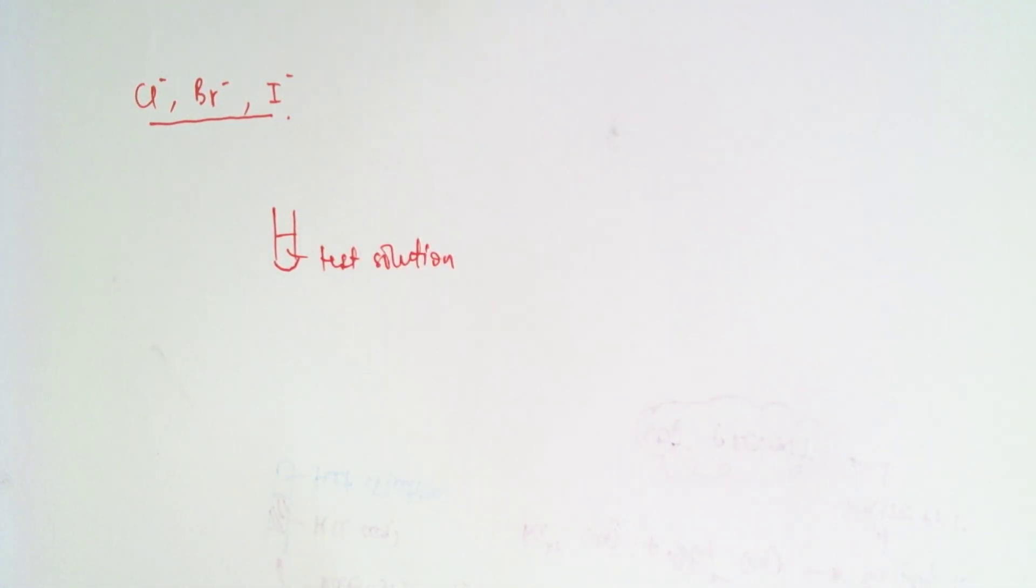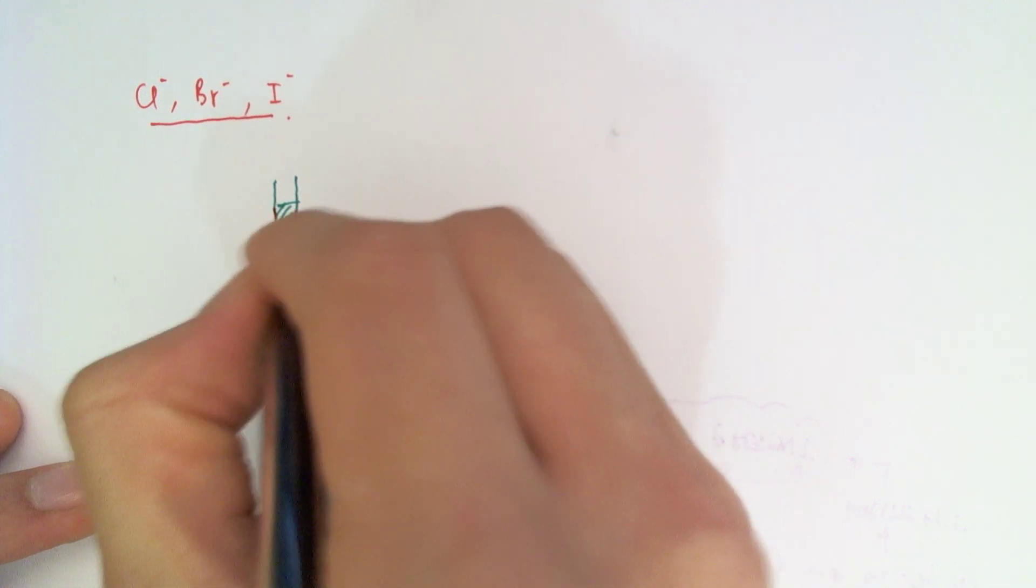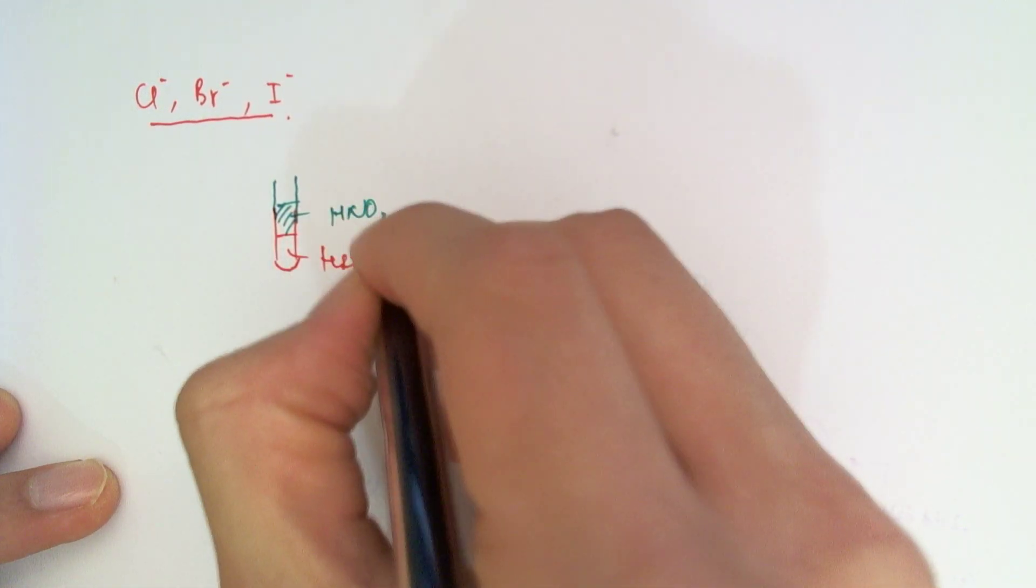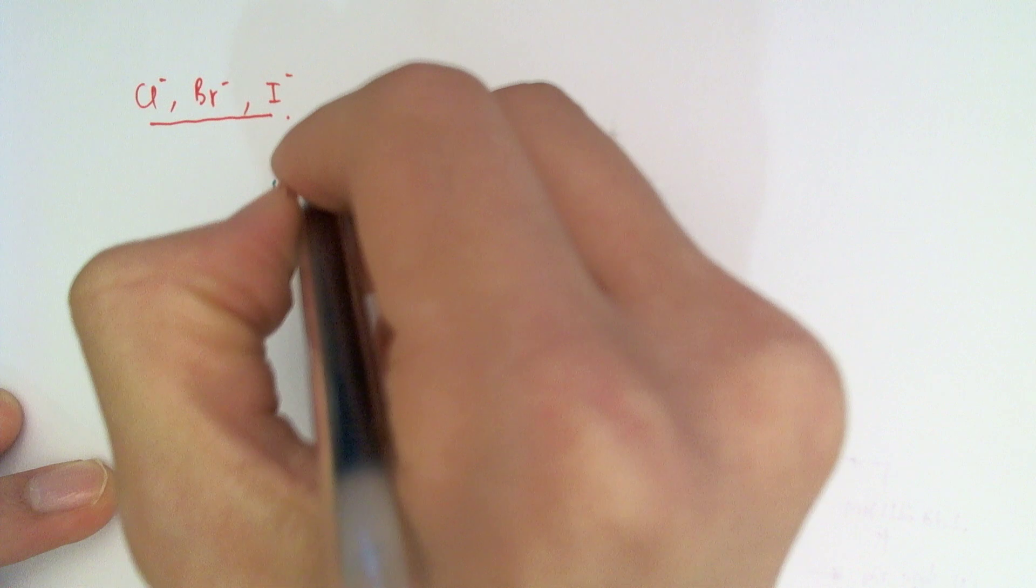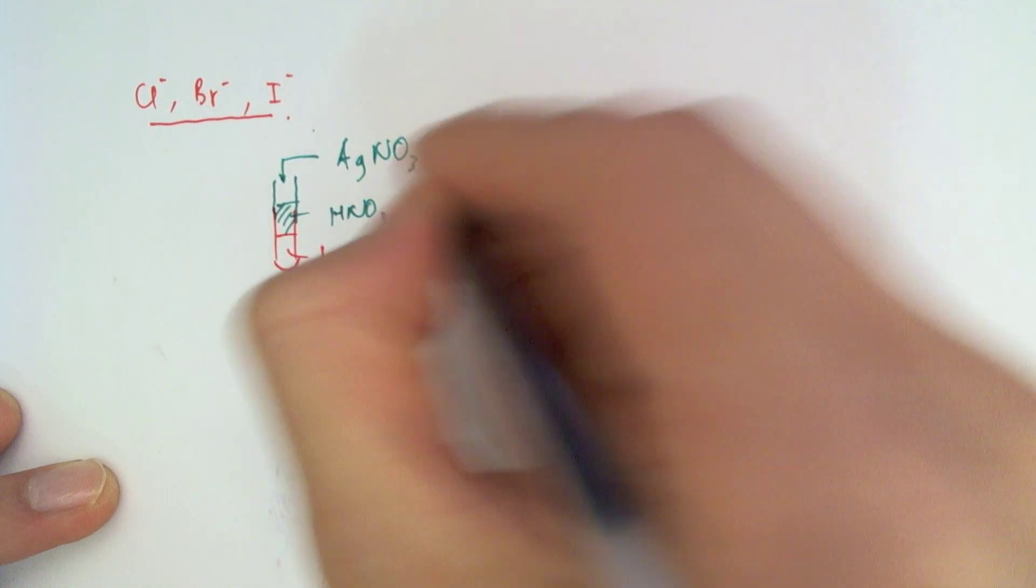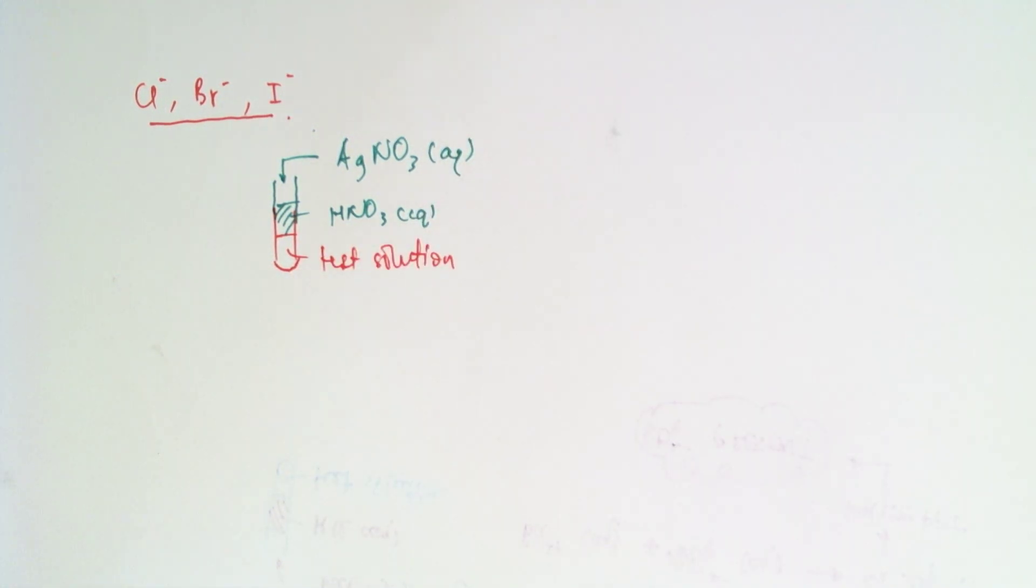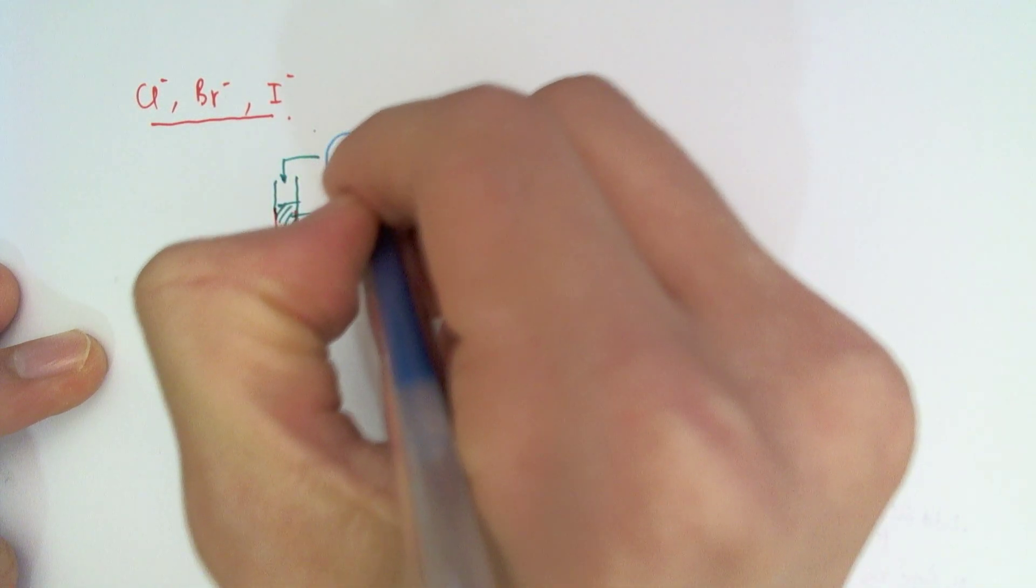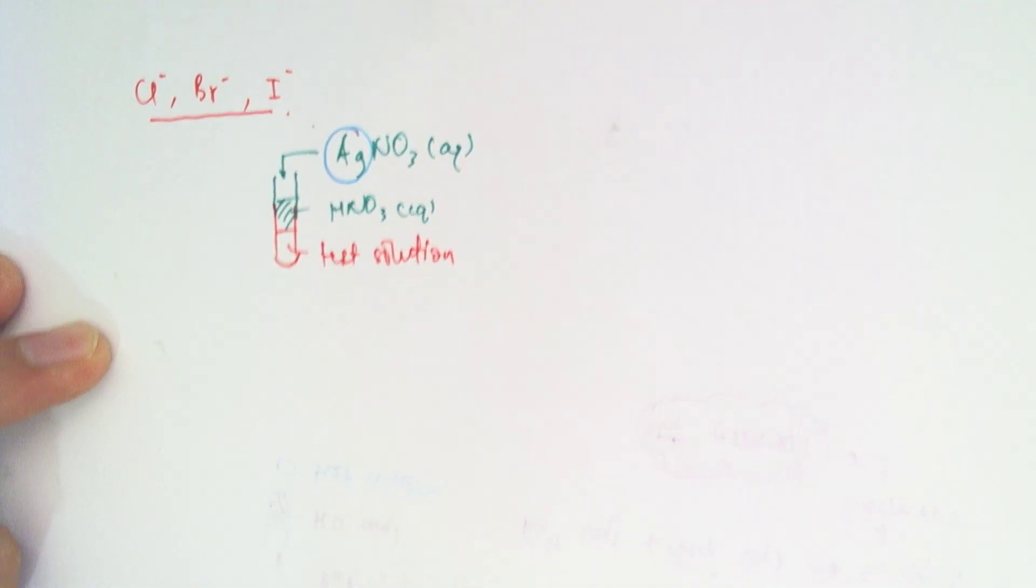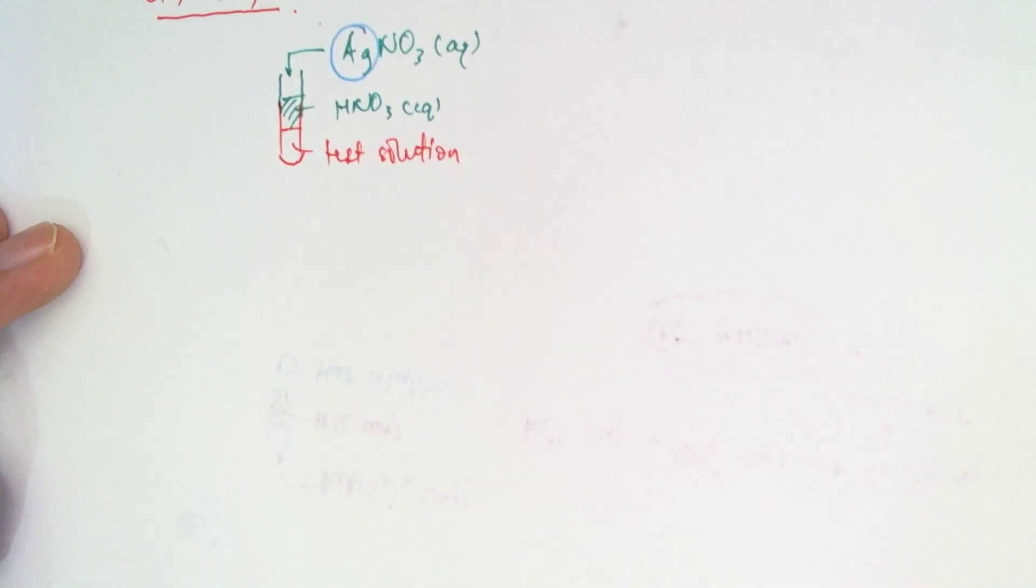And once again, I'm going to need an acidic medium. So I'll put equal amounts of nitric acid into this. And then into that, I'll put some silver nitrate. So what will happen is the silver ions will react with each of these in turn, depending on which is present, to give me a colored precipitate.